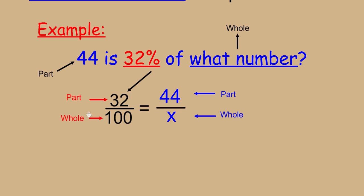All we have to do to solve this problem, if you're not able to recognize a relationship between the different numbers here, is to multiply the cross products. 32 times x equals 32x, and we multiply the other cross products, 100 times 44, or 44 times 100.